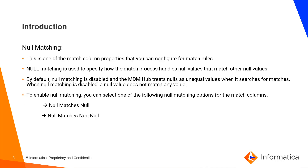So what is null matching? This is one of the match column properties that you can configure for match rules. Null matching is used to specify how the match process handles null values that match other null values. By default, null matching is disabled and MDM treats null as an unequal value when it searches for matches. When matching is disabled, a null value does not match any value.